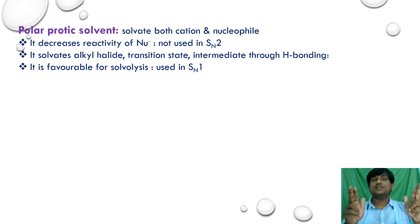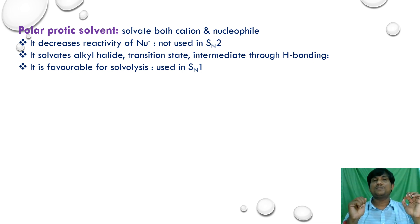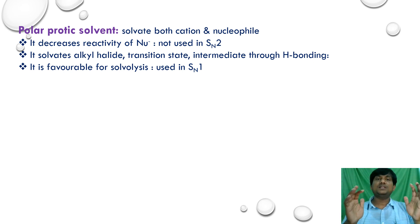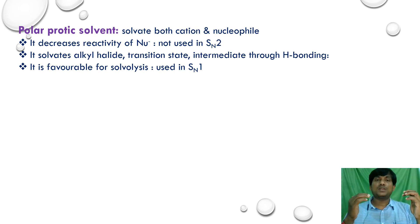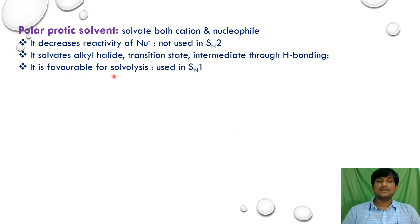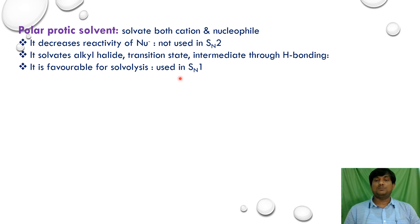However, polar protic solvents are suitable for SN1 reactions because they can form hydrogen bonds and easily promote ionization of alkyl halides into carbocations. In SN1 reactions, formation of the carbocation is very crucial. In the presence of polar protic solvents, carbocation formation is easy, the solvents stabilize the positively charged carbocation, and the solvolysis process proceeds readily.